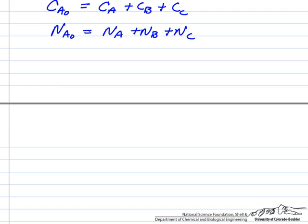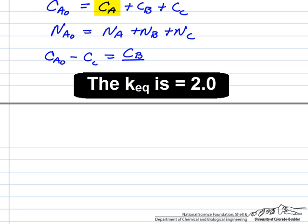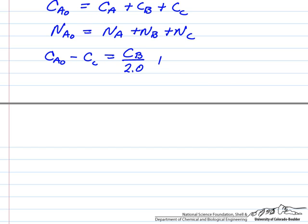Now we can substitute in the concentration equation, so I'm going to do some rearranging. CA0 minus concentration of C is going to be equal to the concentration of A is the concentration of B over 2.0 from equilibrium, and of course plus the concentration of B. So this is 1.5 times the concentration of B.